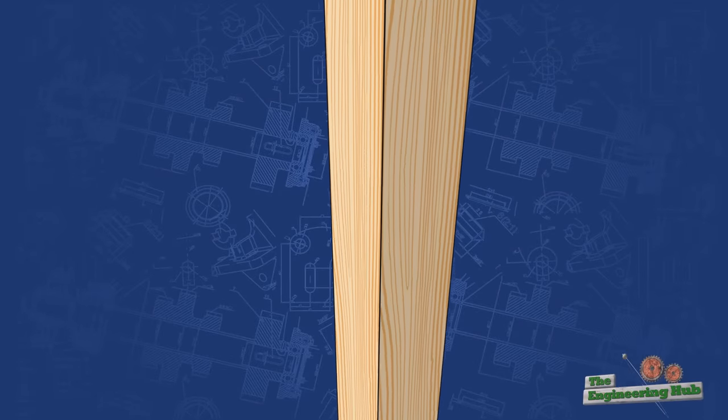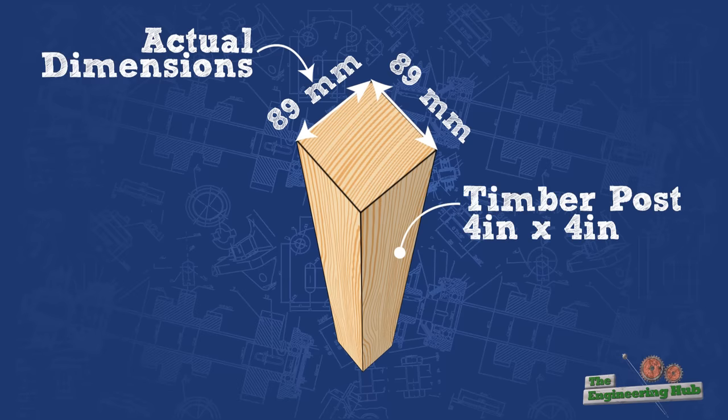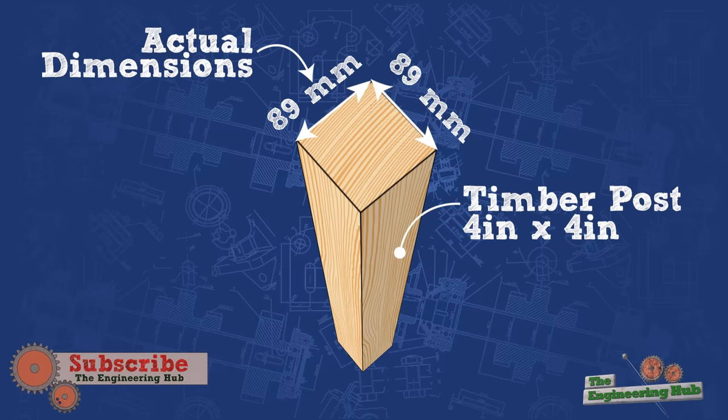We will investigate a 4x4 timber post whose dimensions are 89x89 mm. But to understand the limits of the carrying capacity of a column, first we need to know how columns actually fail.